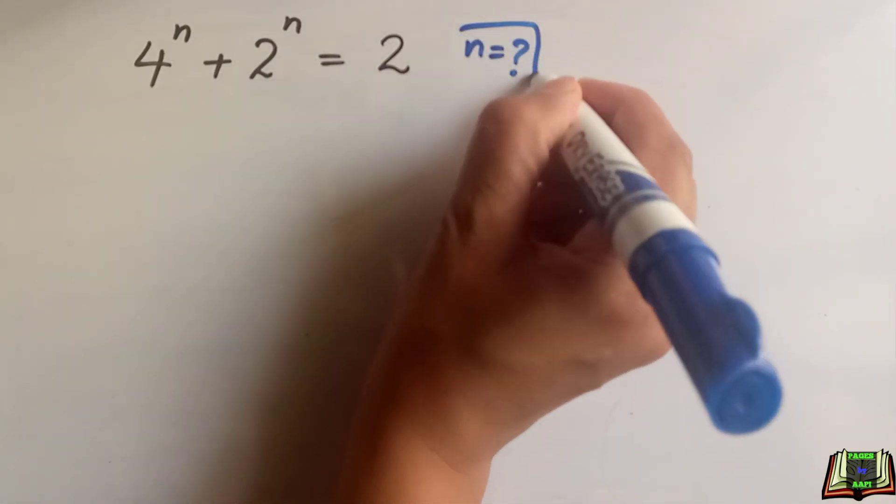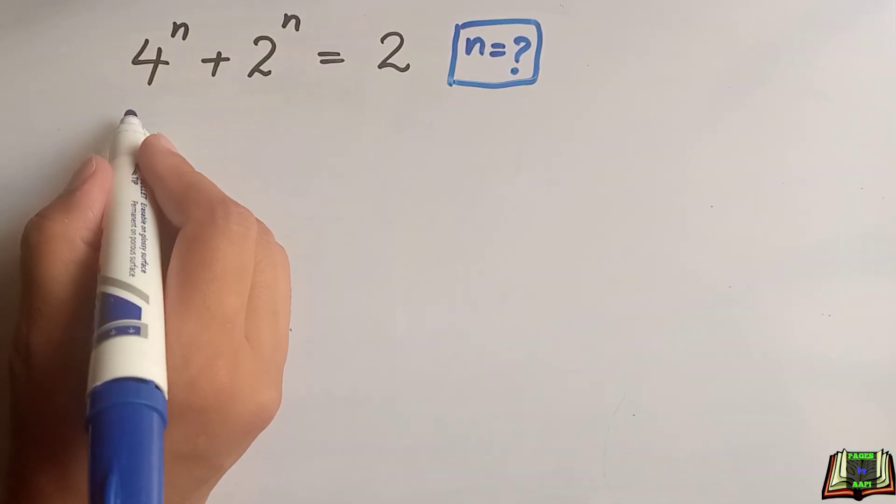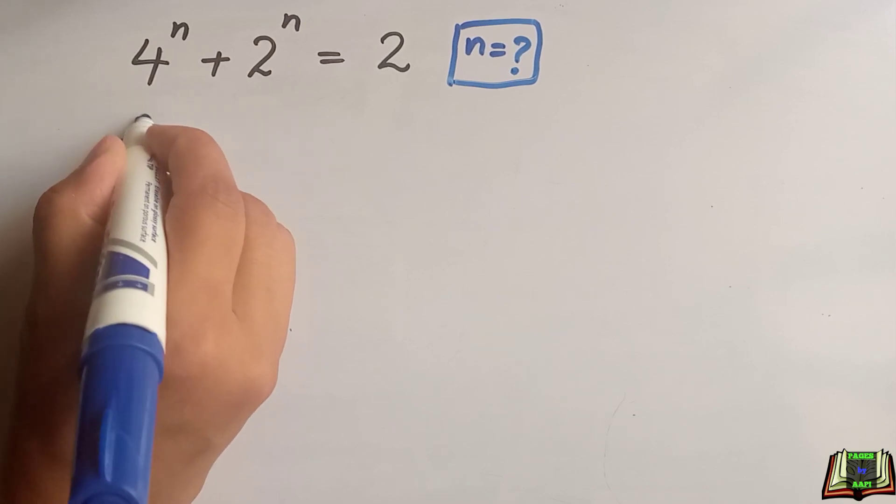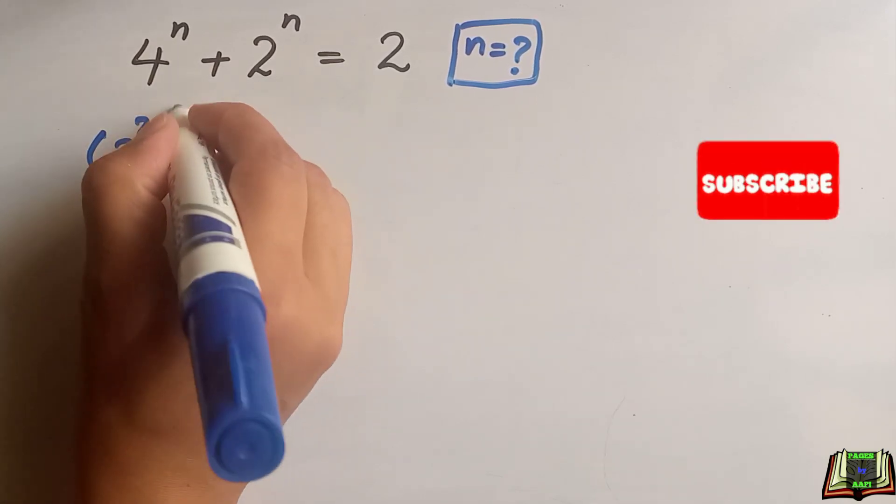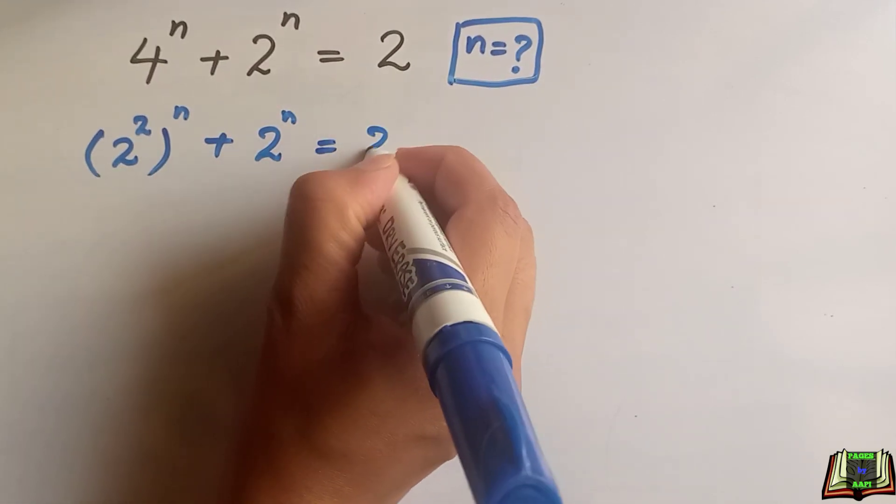So let's see how we can find it out. We know that 4 is equal to 2 to the power 2. So 2 to the power 2 whole power n plus 2 to the power n is equal to 2.